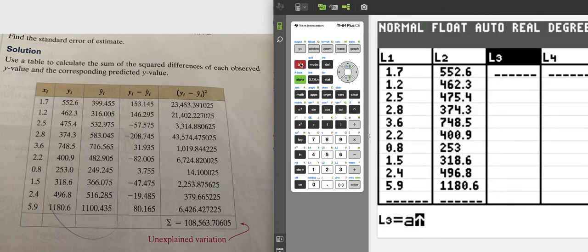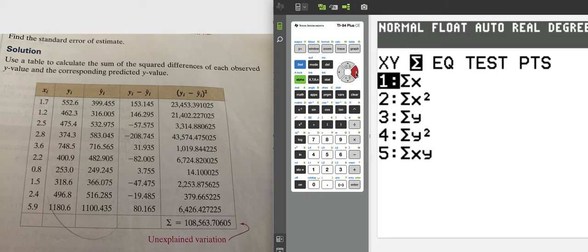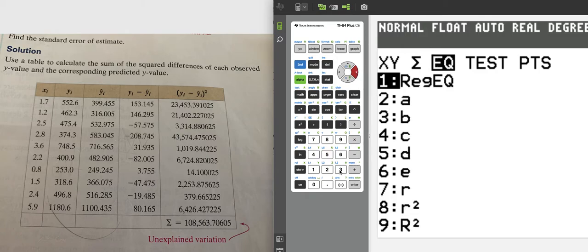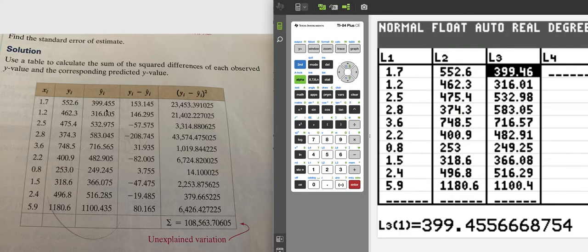We're going to take that times L1, plus—if I'm going too fast just pause and rewind—vars again, number five for the equation. We want number three, b. Hit enter and there they all show up.